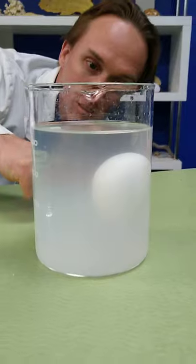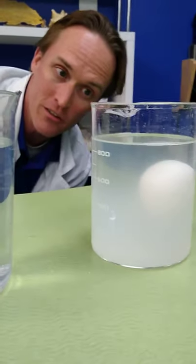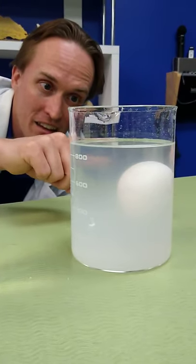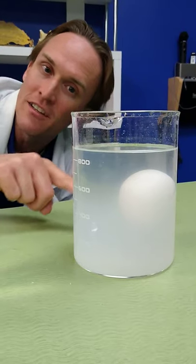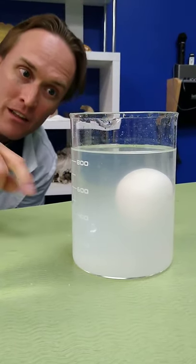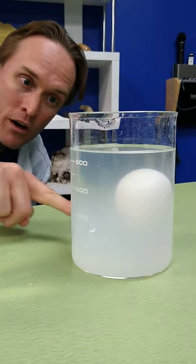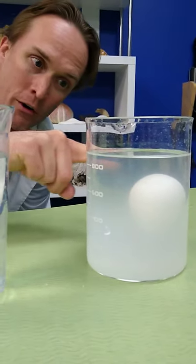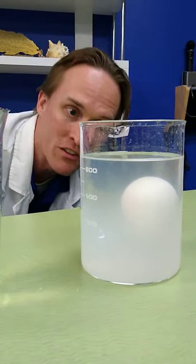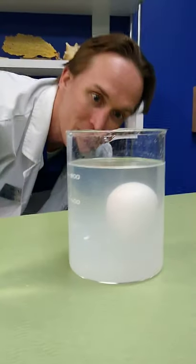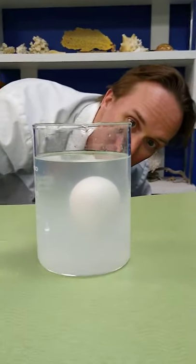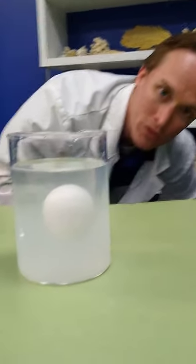and this bottom layer is salt water, very salty water. The egg is going to be less dense than the salt water, meaning it will float on top of the salt water. But it's more dense than the fresh water at the top, meaning it will sink. And that egg is just going to sit there right in between those two layers.